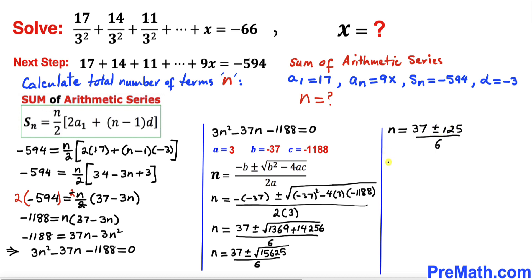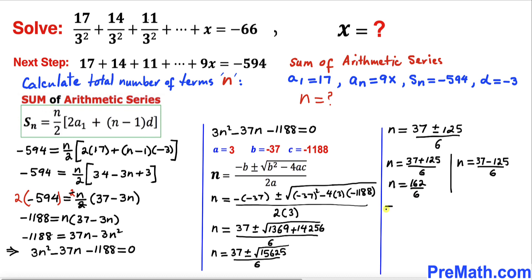Splitting the plus and minus signs: n equals 37 plus 125 divided by 6, or n equals 37 minus 125 divided by 6. The first case gives n equals 162 divided by 6, so n equals 27.